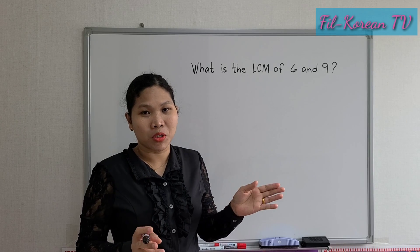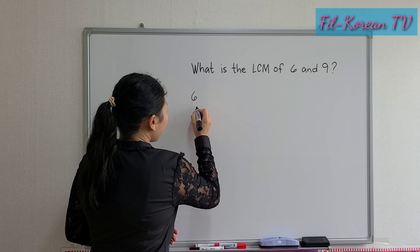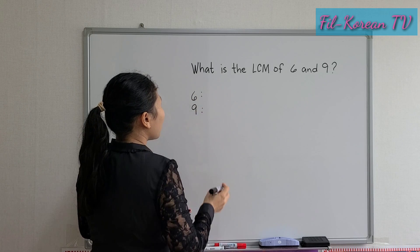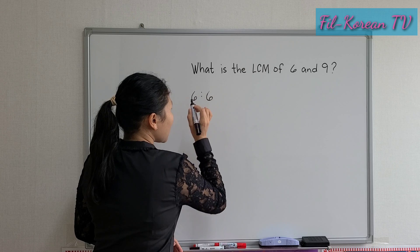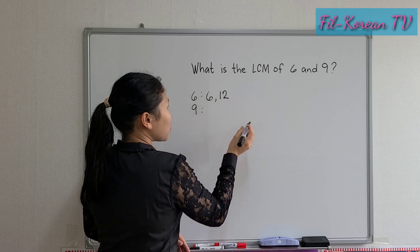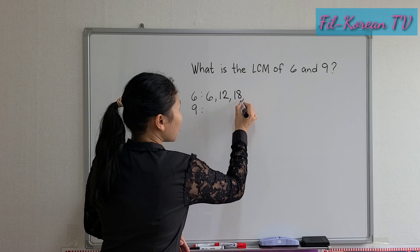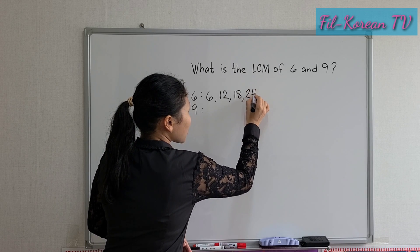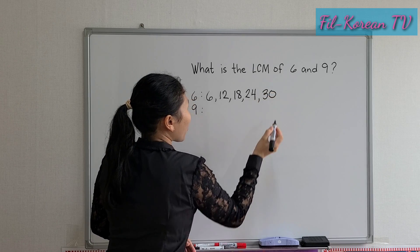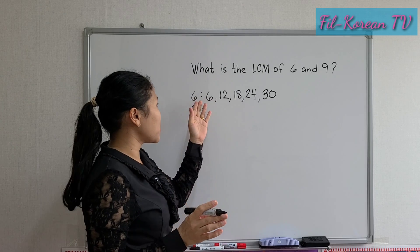Okay, like this. 6 and 9. Multiples of 6: 6 — that is 6 times 1; then 12, 6 times 2; 18, 6 times 3; 24, 6 times 4; and 30, 6 times 5. So we will write the first 5 multiples of 6.